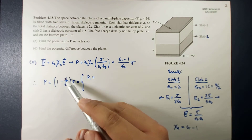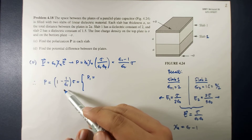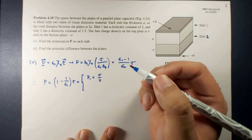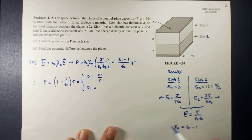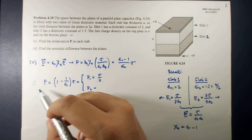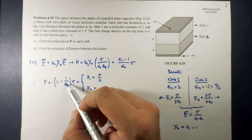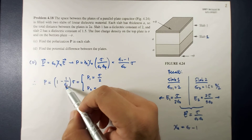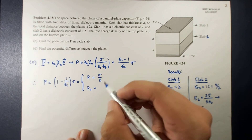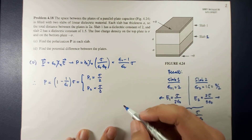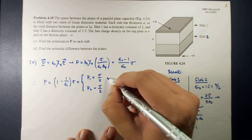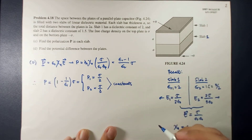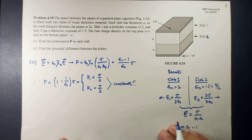For slab 1, the polarization is 1 minus 1/2, which is 1/2, so P₁ equals σ/2. For slab 2, the polarization is 1 minus 1/(3/2), which is 1 minus 2/3, giving 1/3, so P₂ equals σ/3. As you can notice, these two are constant — the polarization in each slab is uniform.